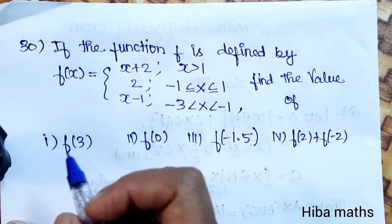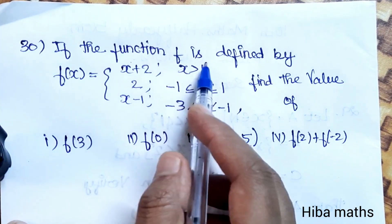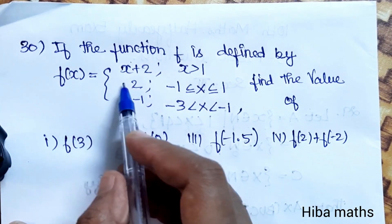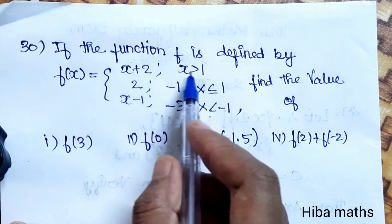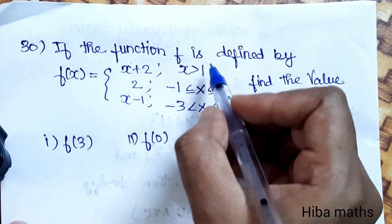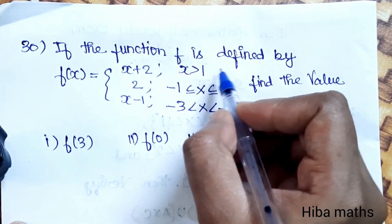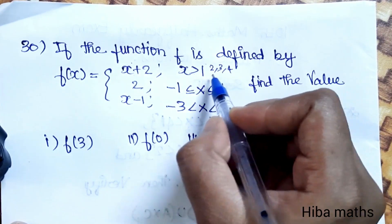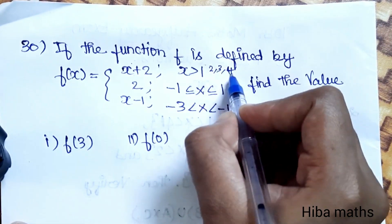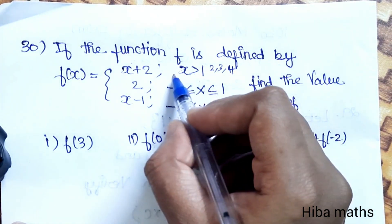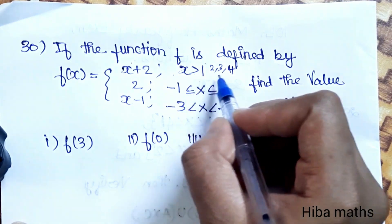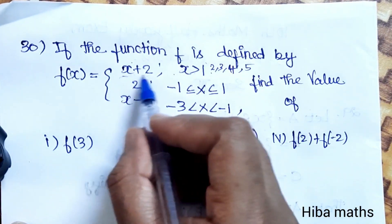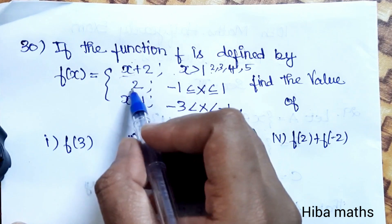Second question, number 13: If the function F is defined by F(x) equals x plus 2 when x is greater than 1, so values like 2, 3, 4... If the values are greater than 1, we substitute x plus 2 into the function.